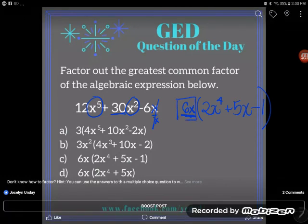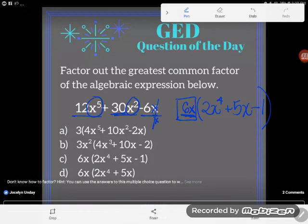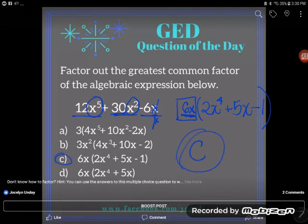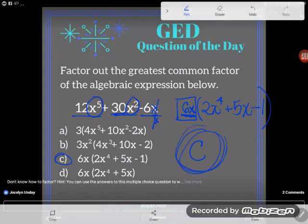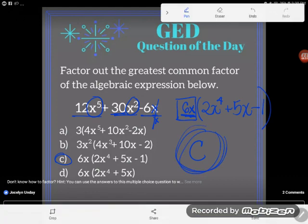I would first decide what the greatest common factor was, 6x, then I would divide it out of each of the terms in the expression. Great. So either way you do this problem, you can see the answer is still C. If you have any questions about this or any other GED topic, be sure to drop them in the comments.